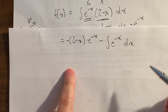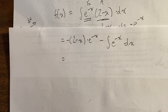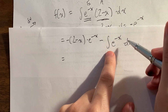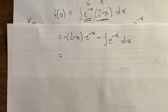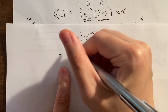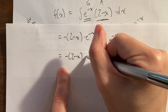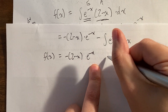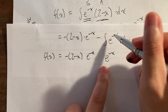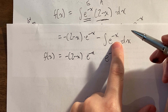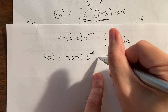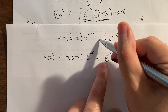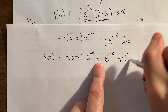Complete the antiderivative: f(x) = −(2−x)e^(−x) − e^(−x) + C. The integral of e^(−x) is −e^(−x), so the negative signs combine to give a plus. Don't forget + C, because we'll use the initial condition f(ln3) = 4 to find the specific constant.